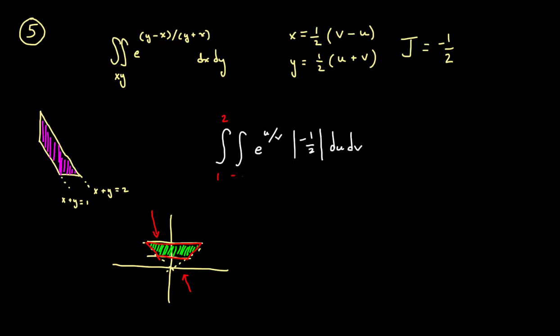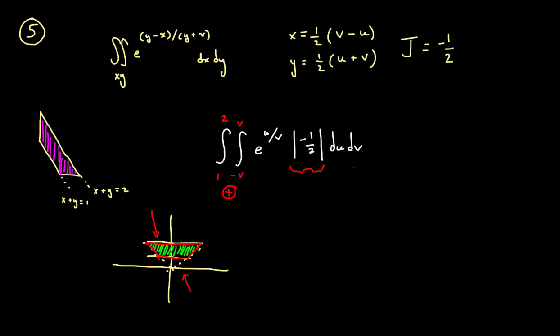And then we went from the lower function of u equals negative v to u equals positive v. So we provided a positively oriented structure, and because we are forcing a positively oriented structure, we need the absolute value of the jacobian.